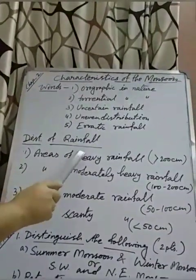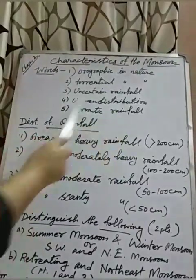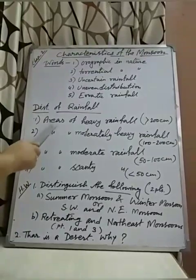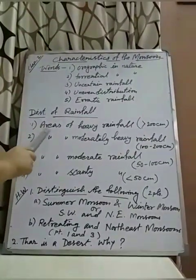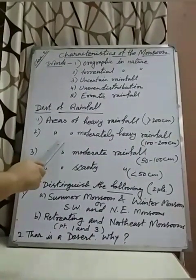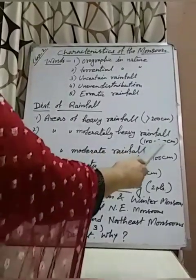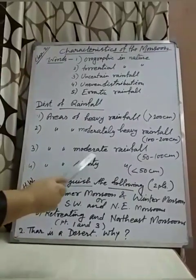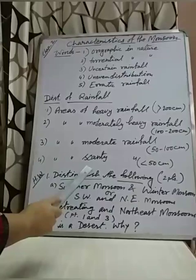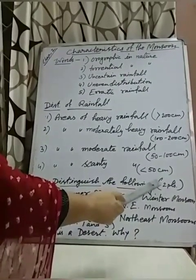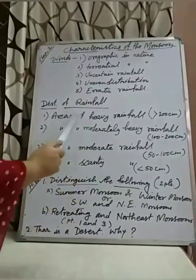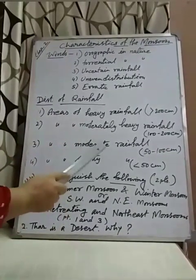The last part is the distribution of rainfall. On the basis of the amount of rainfall, India is divided into four different areas. First, heavy rainfall areas — more than 200 centimeters. Second, moderately heavy rainfall areas — 100 to 200 centimeters. Third, areas of moderate rainfall — 50 to 100 centimeters. Fourth, scanty rainfall areas — less than 50 centimeters. The specific locations for each zone are part of the homework assignment.